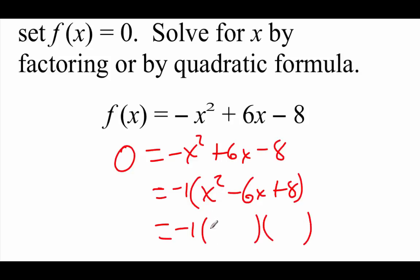In order to get our x squared, we're going to need a couple of x's at the beginning of our parentheses. We need to multiply to a positive 8 and add up to a negative 6. Since the term on the end is positive and the middle is negative, both of these values inside our parentheses have to be negative — and I'm thinking 2 and 4. So we've got negative 1, times x minus 2, times x minus 4.